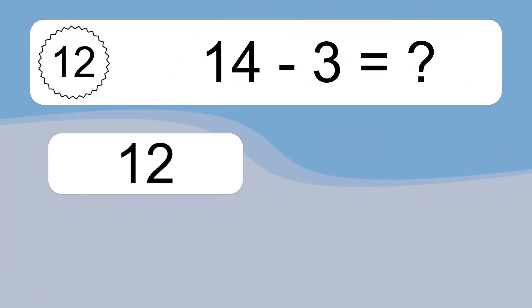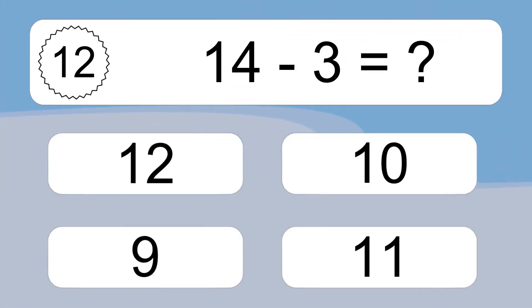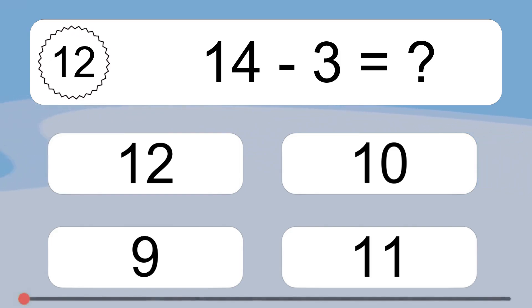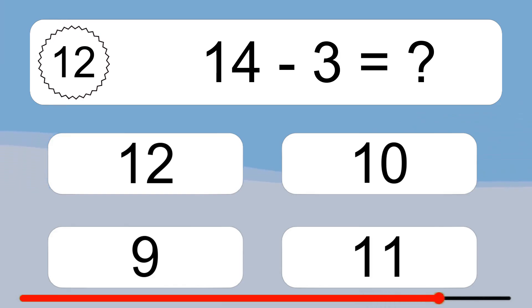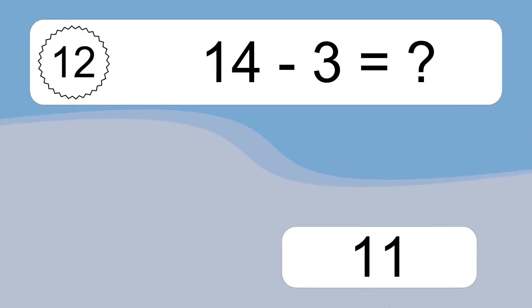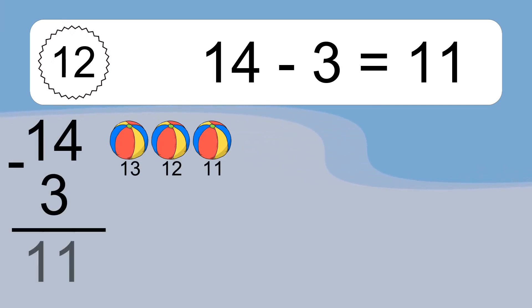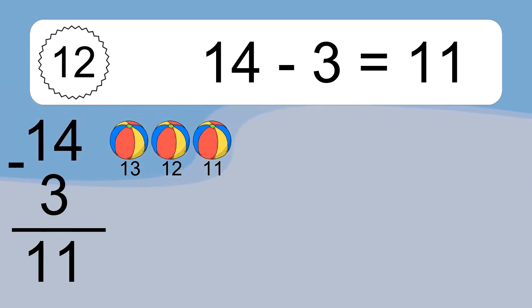14 minus 3 equals what? 14 minus 3 equals 11. Let's count it: 13, 12, 11.